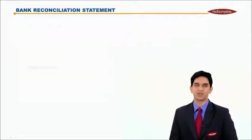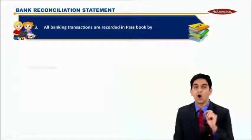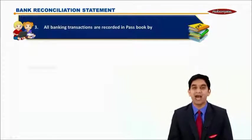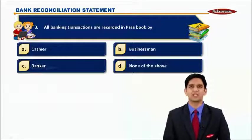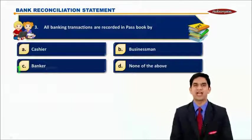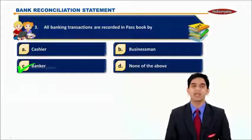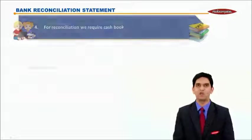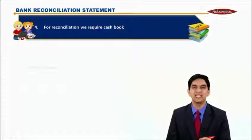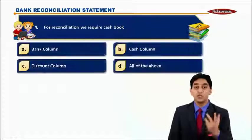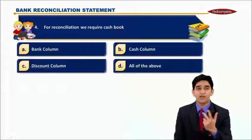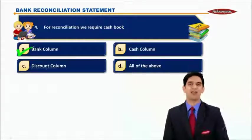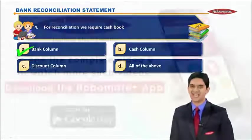Third question: 'All banking transactions are recorded in passbook by...' The correct answer is C — the banker records transactions in passbook. Fourth question: 'For reconciliation, which column of the cashbook do we require?' The correct answer is A — cashbook bank column.